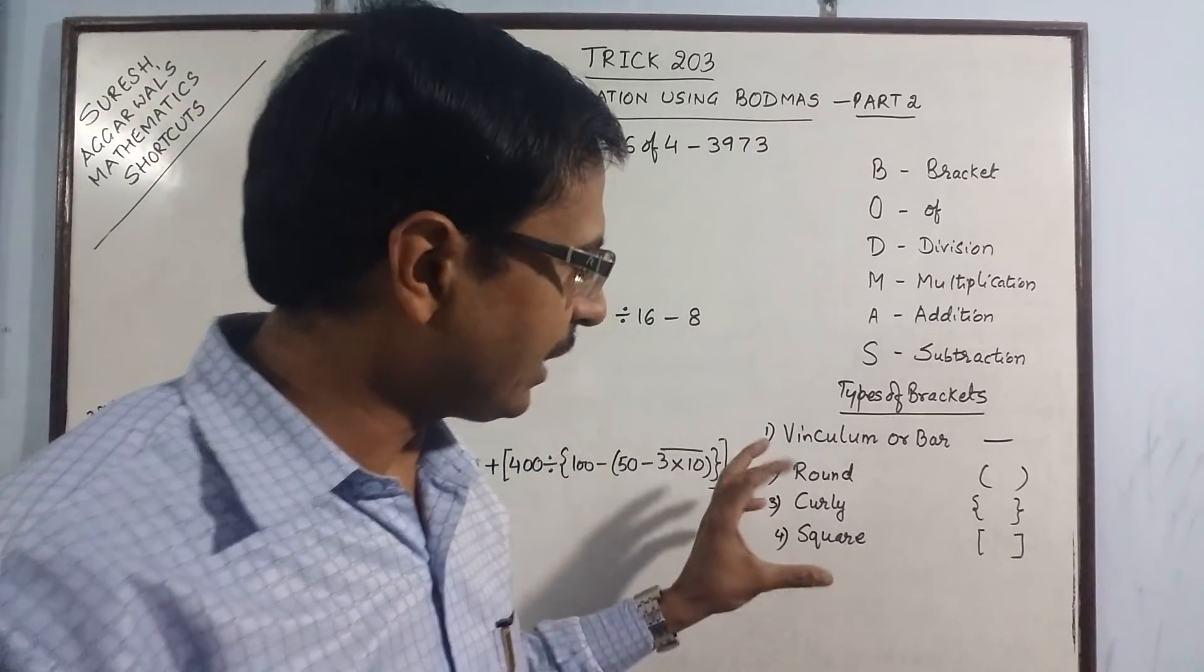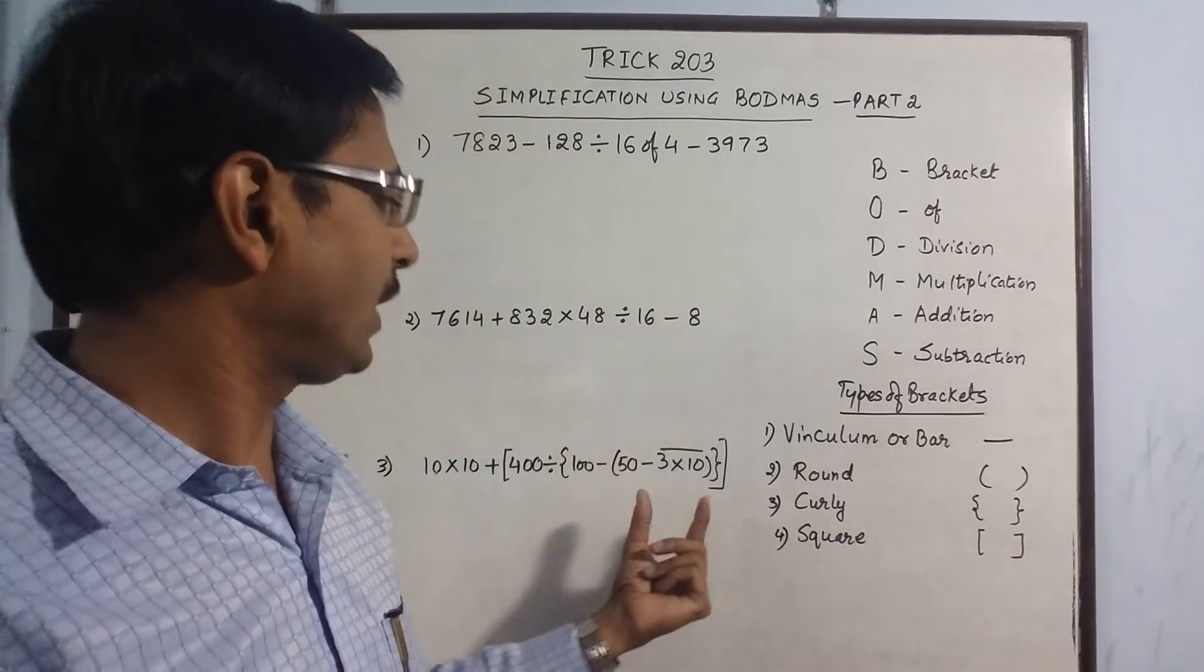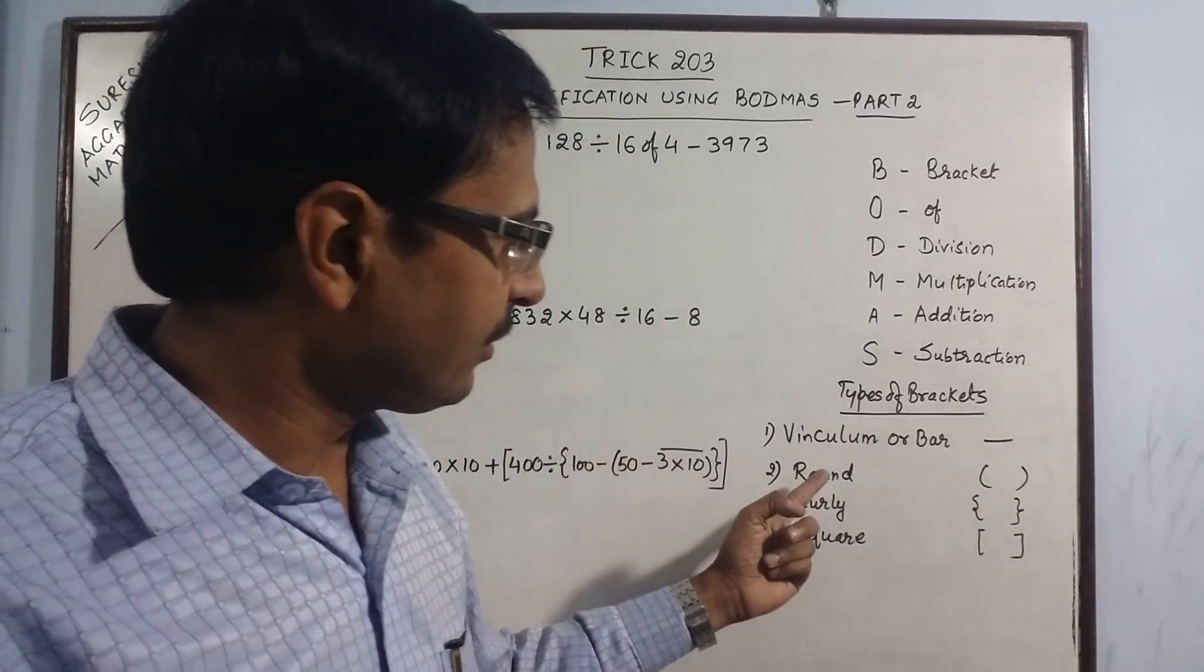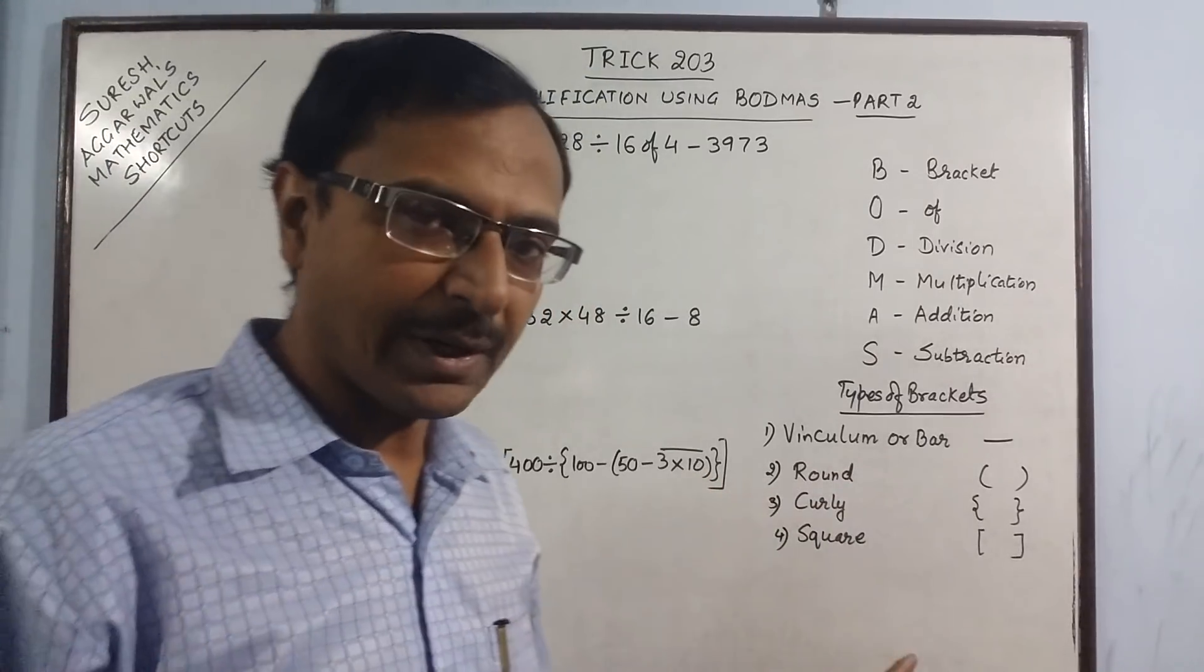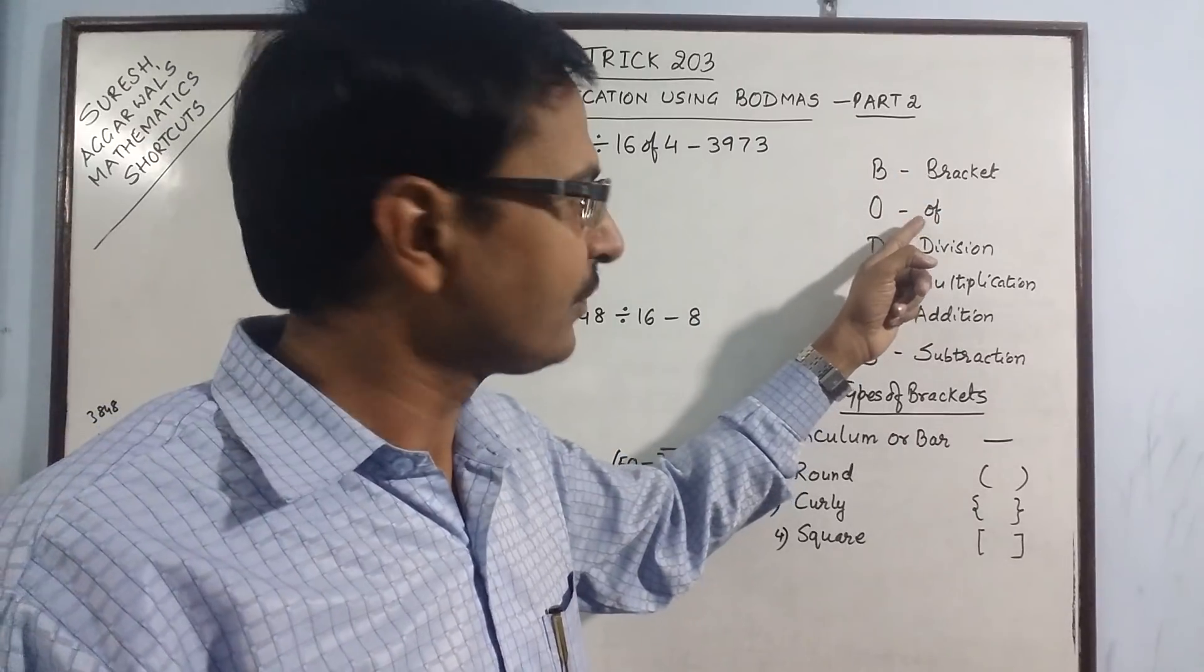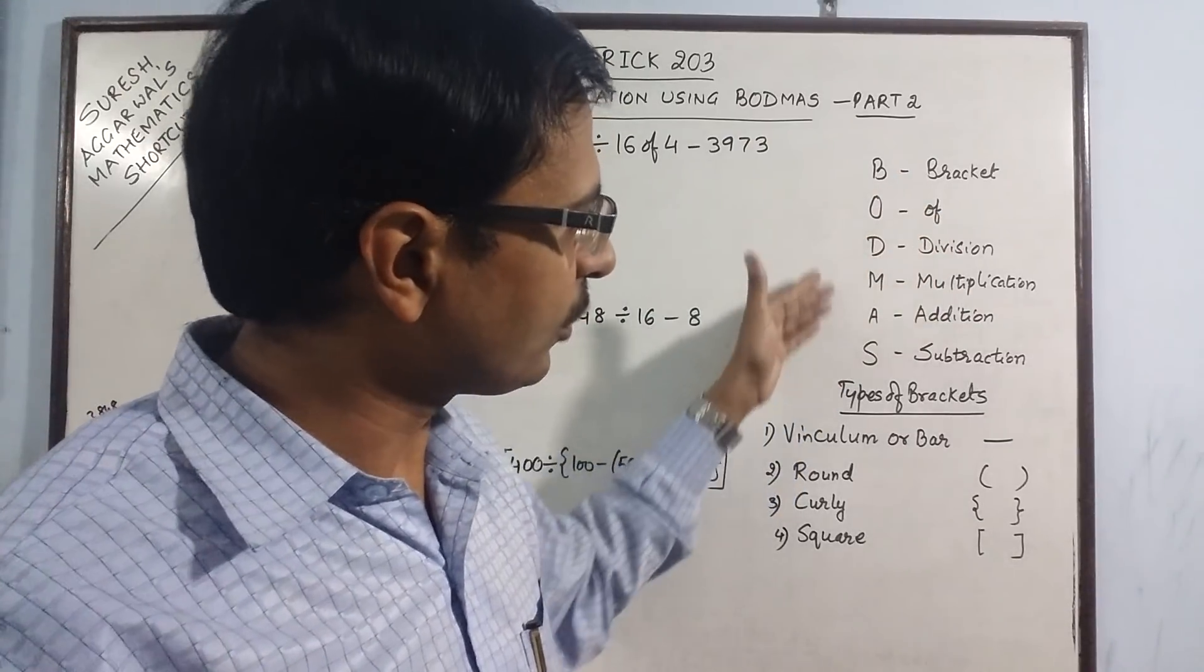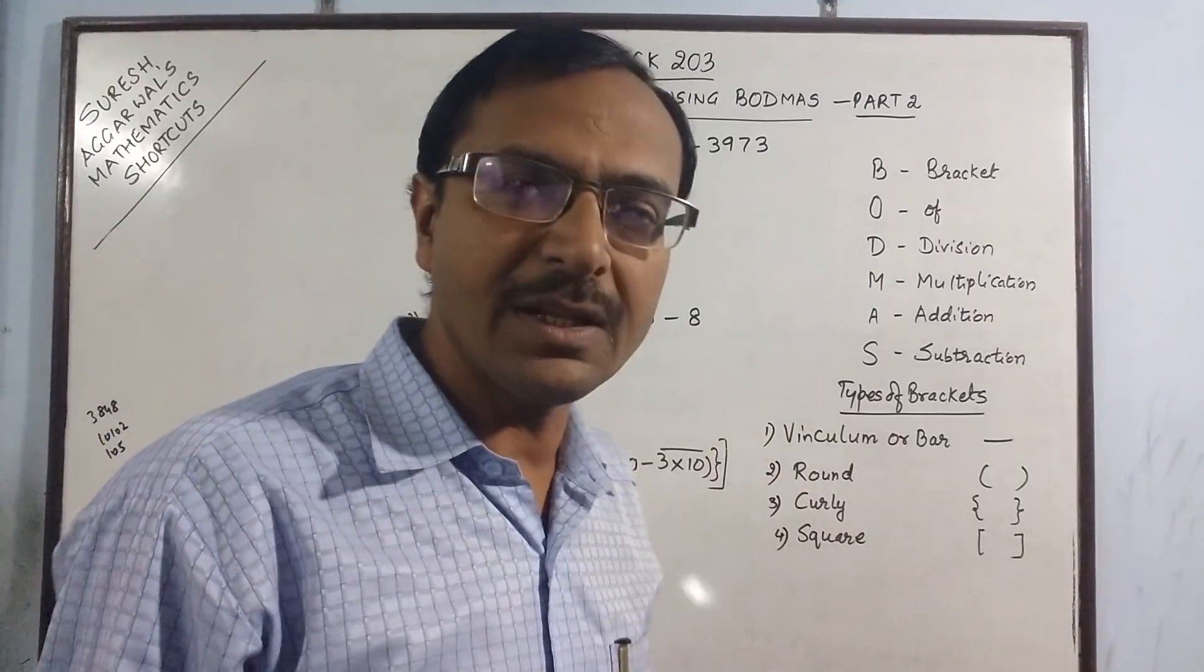Now for removing the bracket you need to know what are the types of brackets. We have four types of brackets: one is the vinculum or the bar, then the round bracket, then the curly bracket, and then the square bracket. Remove the bracket first, remove the 'of' first second number, and then followed by the operations of division, multiplication, addition and subtraction in the priority and in the order in which it exists in this formula.